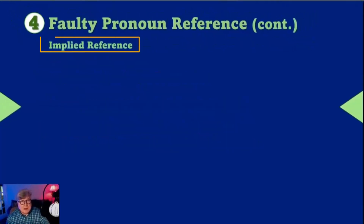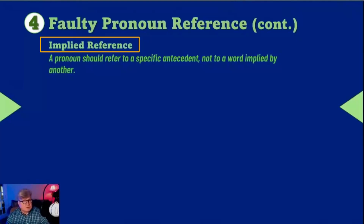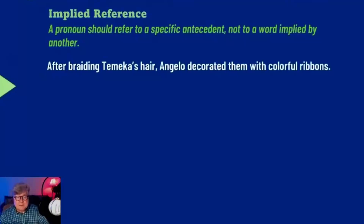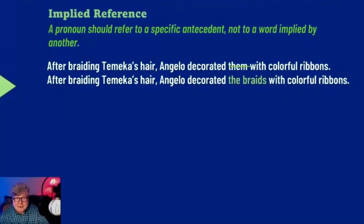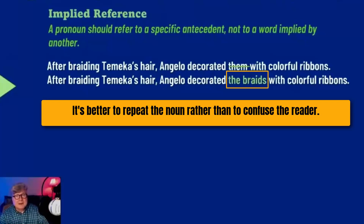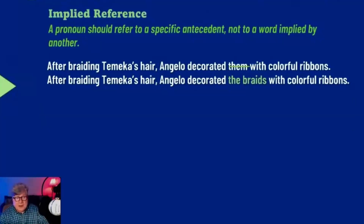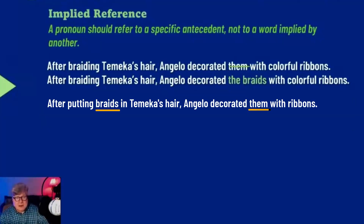Here is implied reference. This is where the pronoun does not refer to a specific antecedent — it refers to a word that is implied by the previous construction. Example: After braiding Tamika's hair, Angelo decorated them. 'Them' refers to braids, but 'braids' is only implied in 'braiding.' It's a noun that is implied, so you can't refer to an implied one. Go ahead and say the actual noun: 'Angelo decorated the braids.' Or you could say: 'After putting braids into Tamika's hair, Angelo decorated them.' That gives you a specific reference.